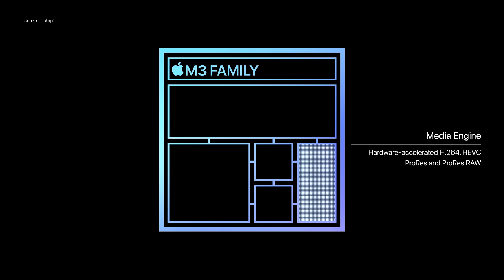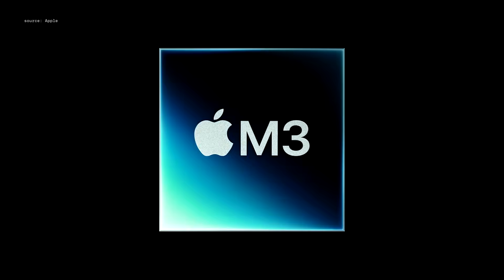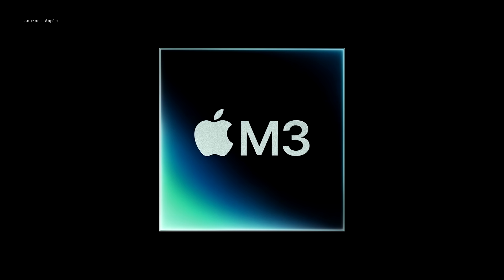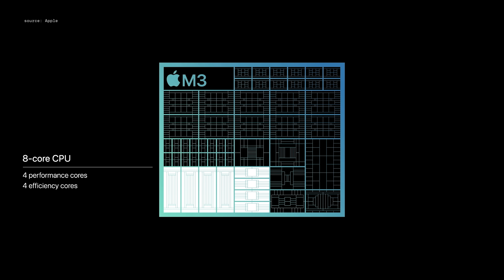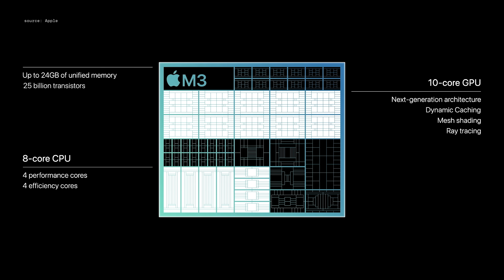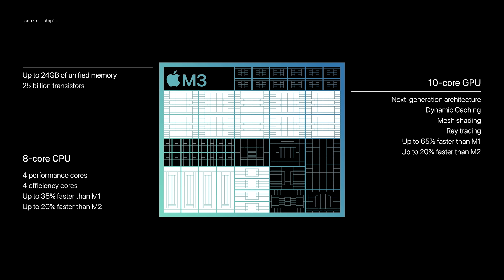The M3 family also has our advanced media engine for hardware acceleration of the most popular video codecs, and now it includes support for everyone, starting with the M3 chip, which delivers phenomenal performance for our most popular systems. It features an 8-core CPU and our next-generation 10-core GPU, and is up to 65% faster than M1.